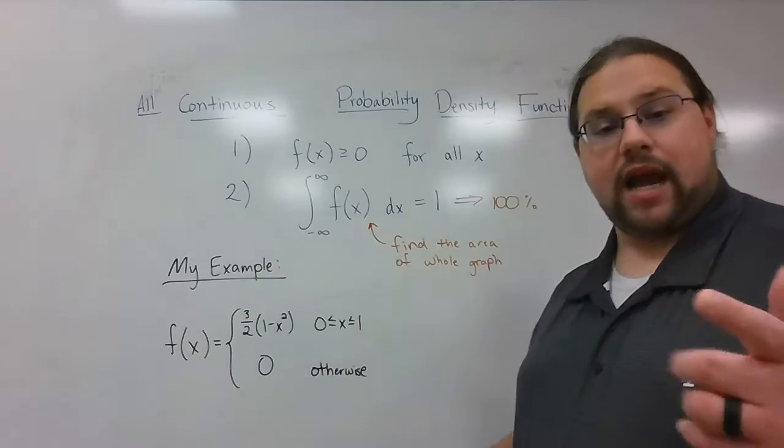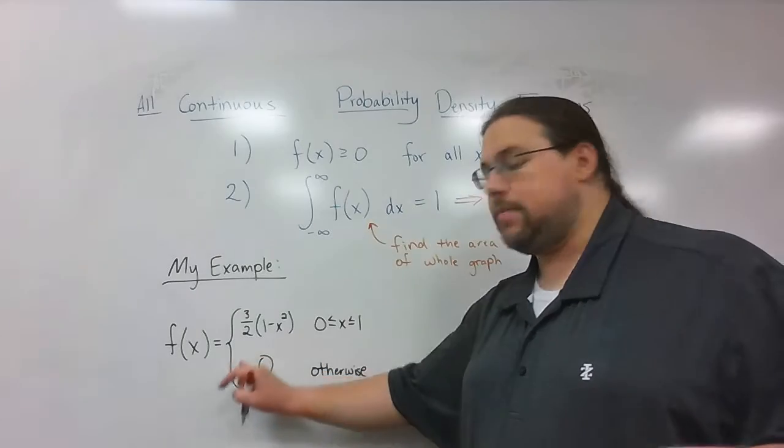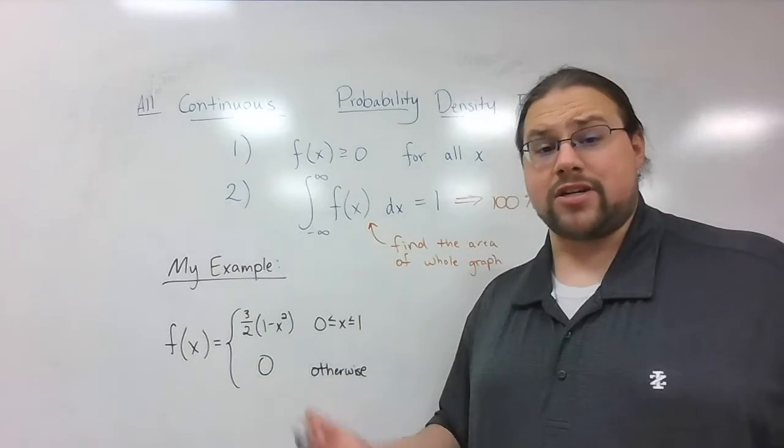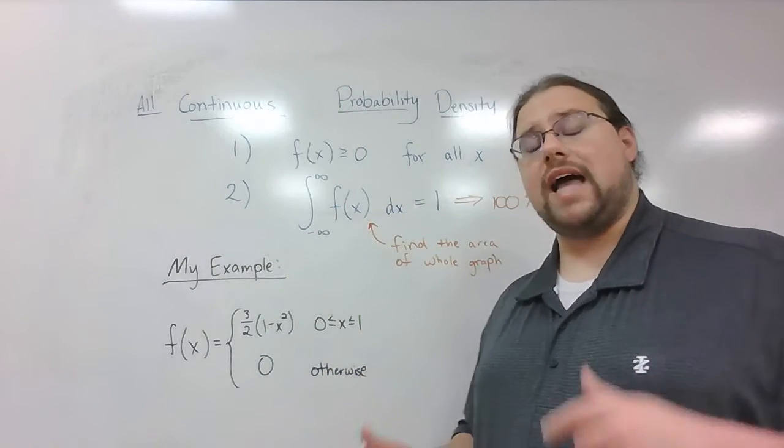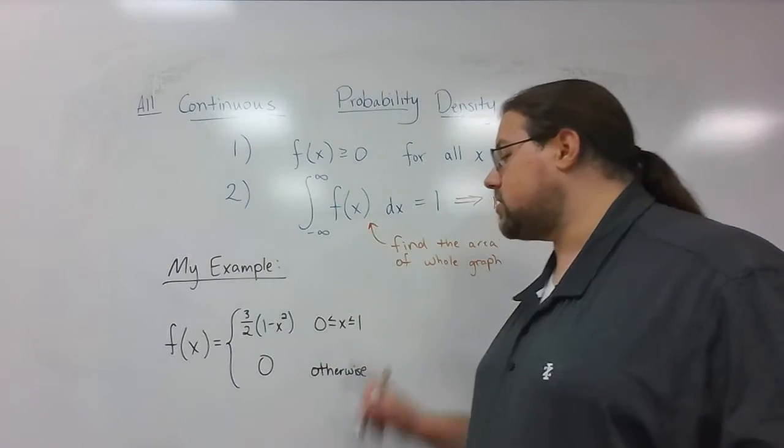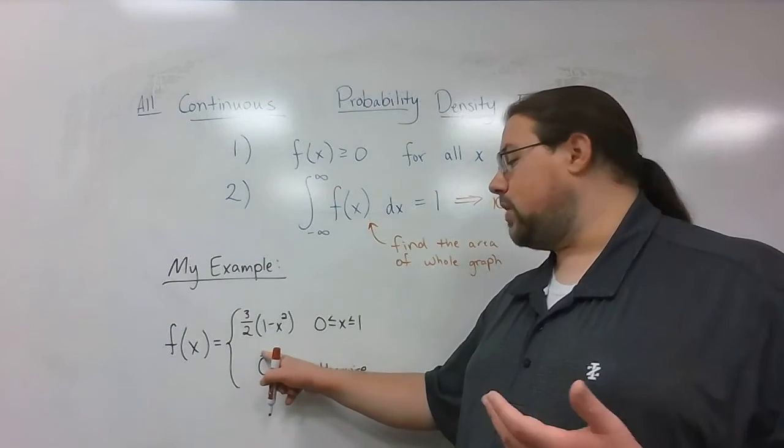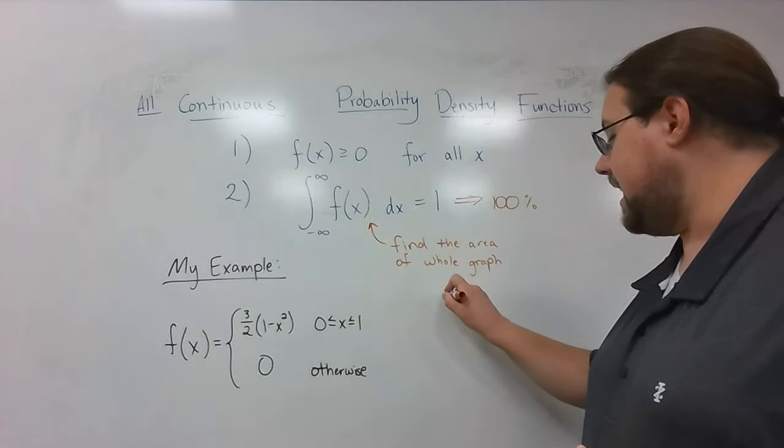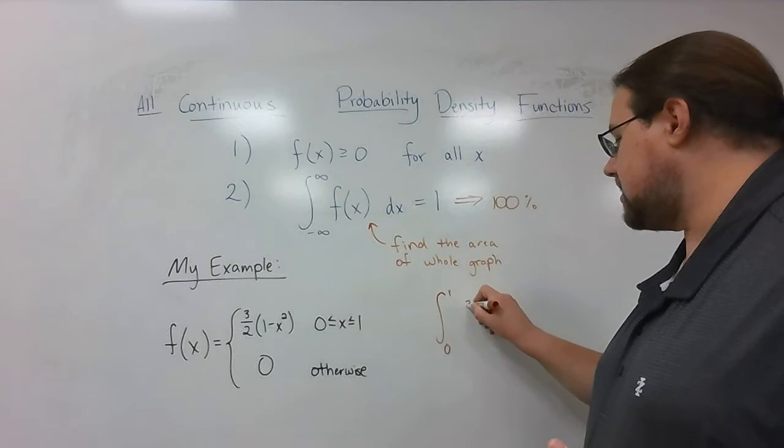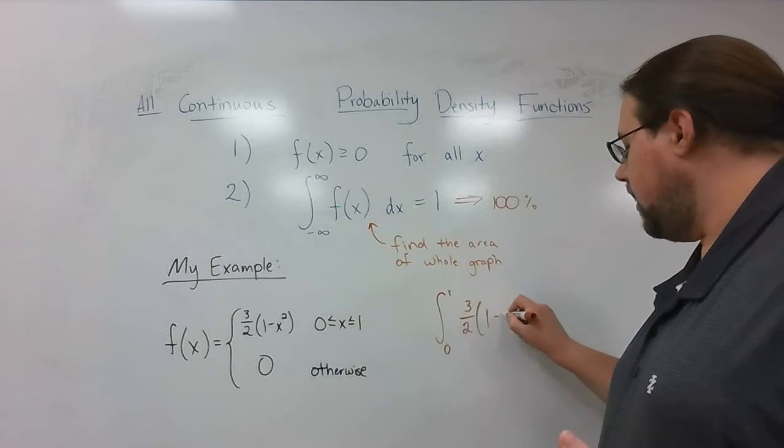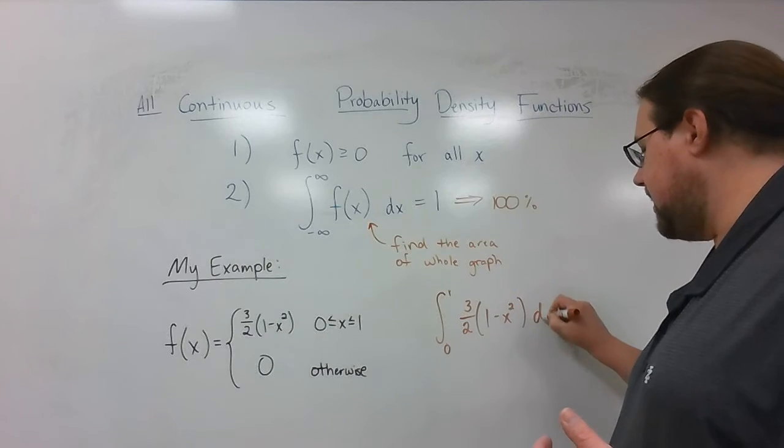I'm going to look at the second part. Now, when I go to integrate this stuff, I don't need to worry about where it's 0. The area under 0 is just 0. So all I have to worry about is integrating the top part. So 3 over 2 times 1 minus x squared from 0 to 1. So I'm going to integrate from 0 to 1 just that top part.